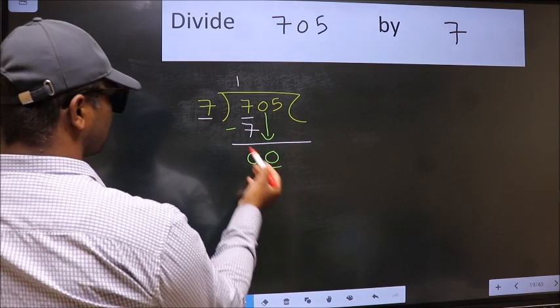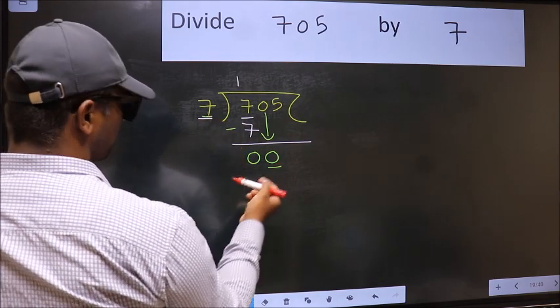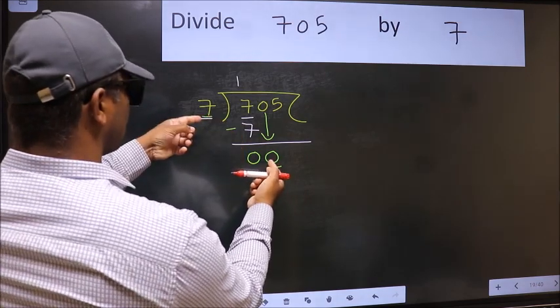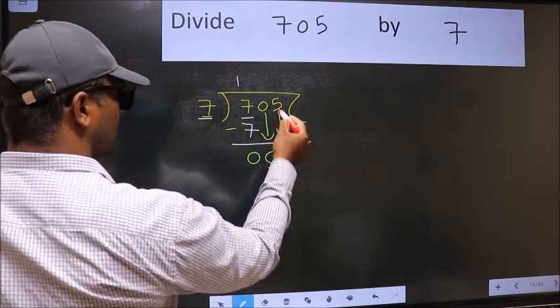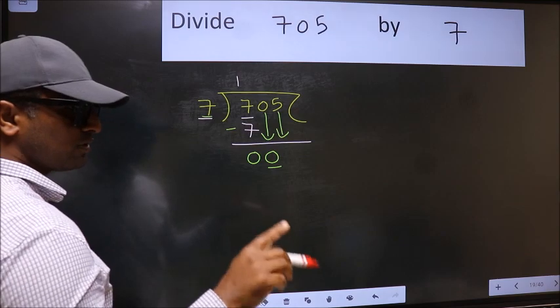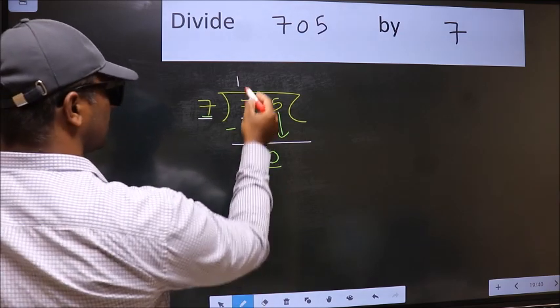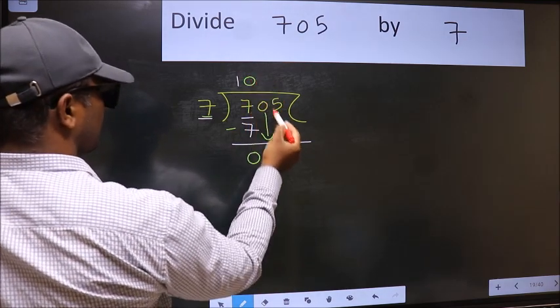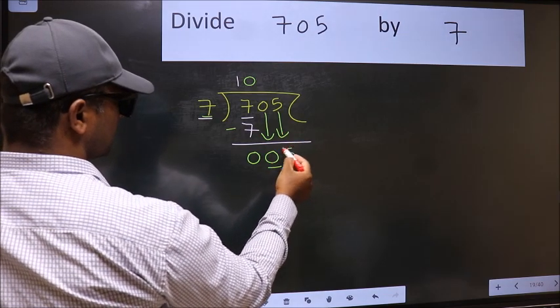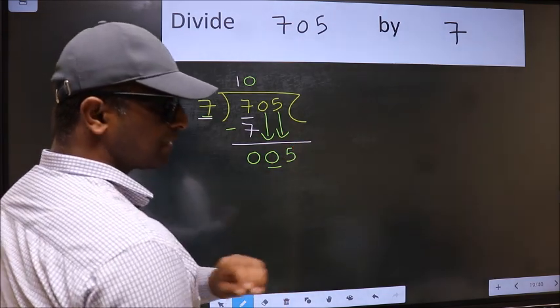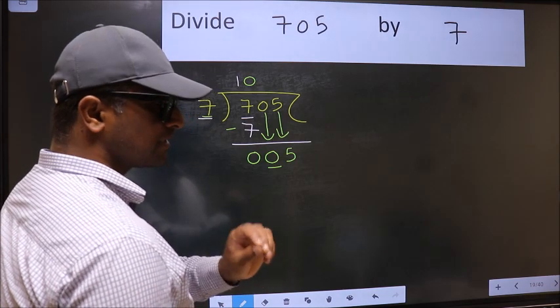Now here we have 0 and here 7. 0 is smaller than 7. So we should bring down the second number. And the rule to bring down second number is we should put 0 here. Then only we can bring this number down. After this step, the mistake happens. And the mistake is this.